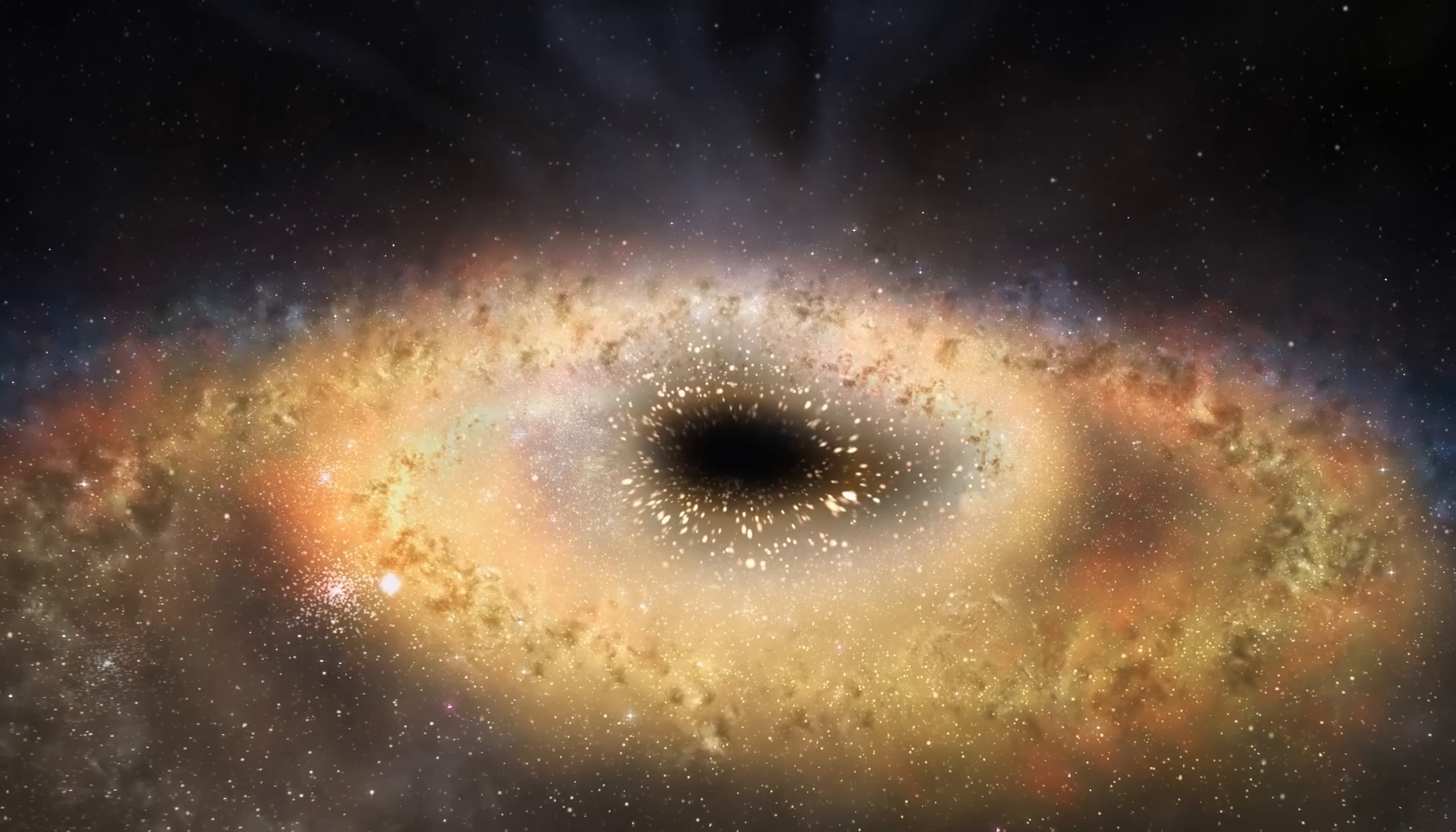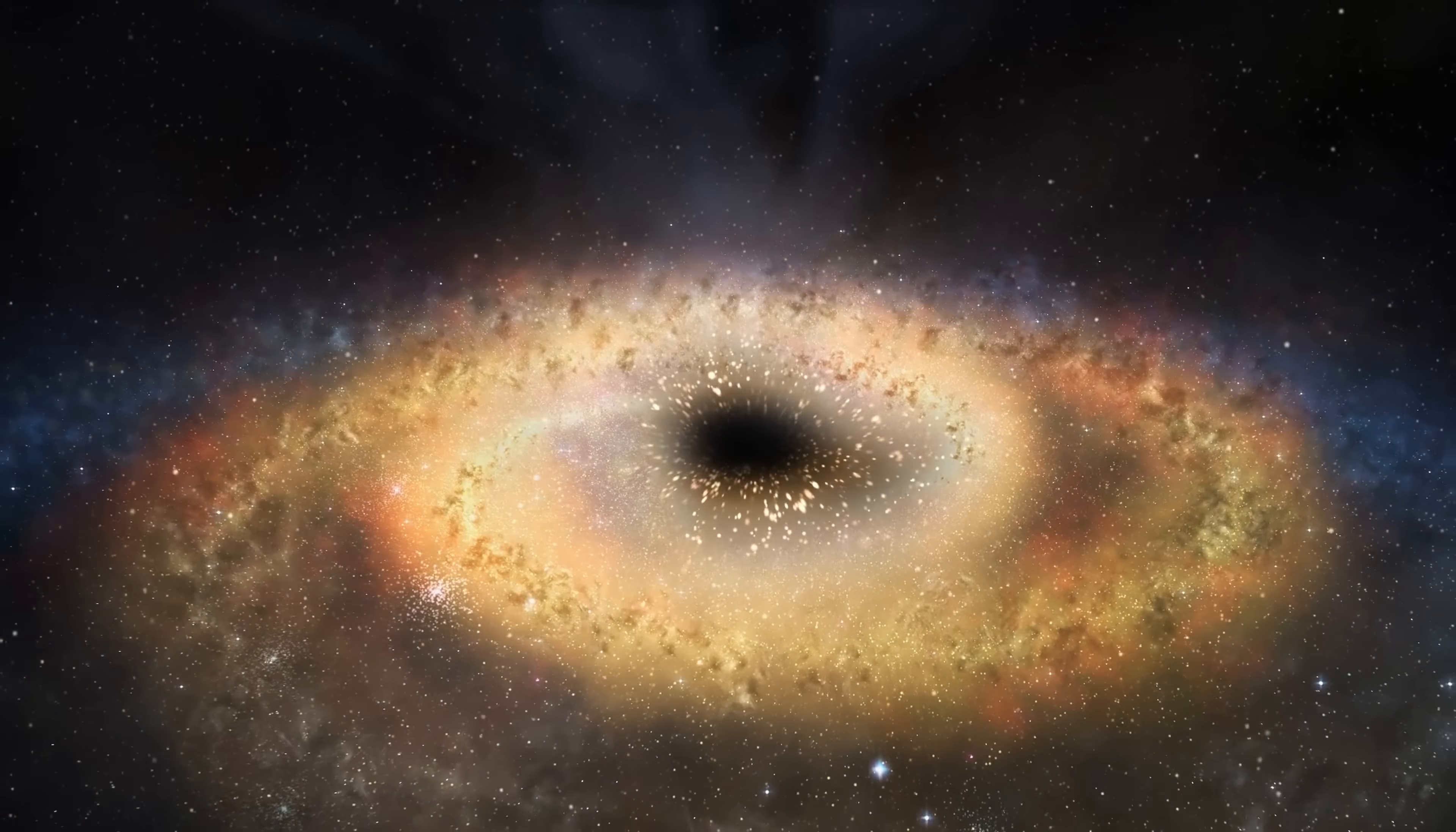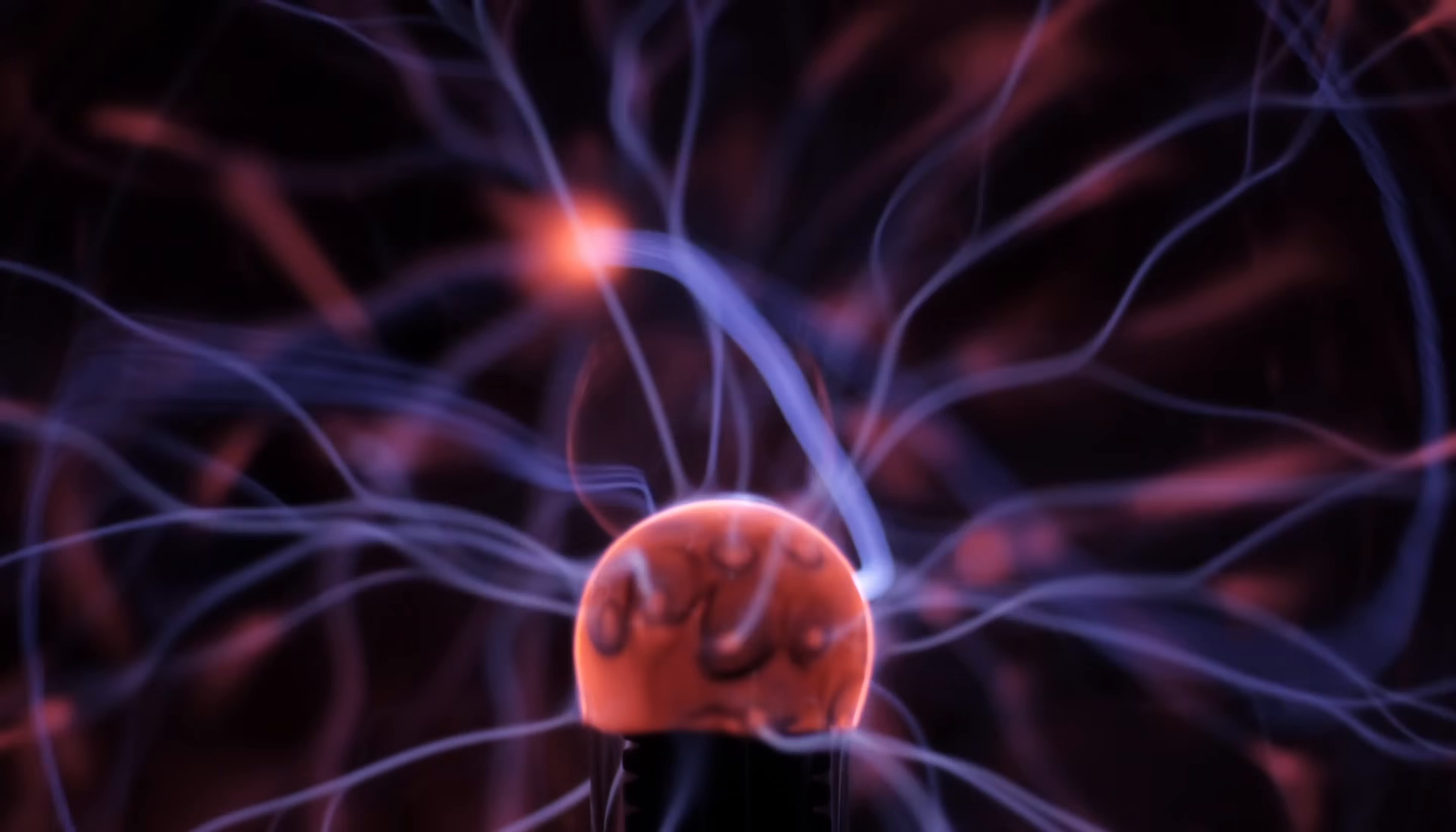So in other words, the magnetic energy here steals the rotational energy from the black hole, making it spin a little bit slower, but also suddenly releasing all of this energy all at once. Actually making this a super effective way to convert gravitational energy into electrical energy.